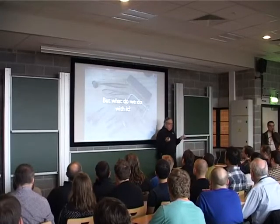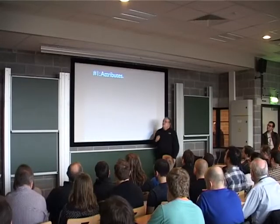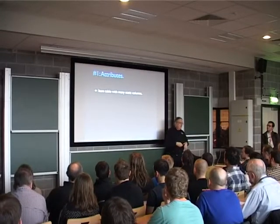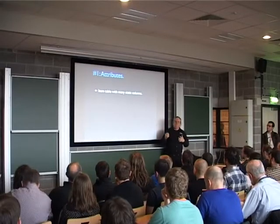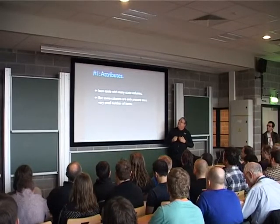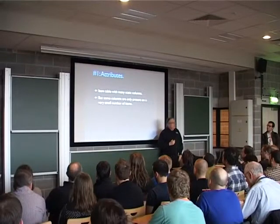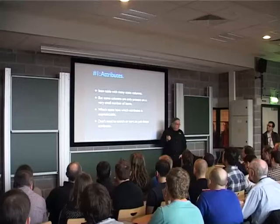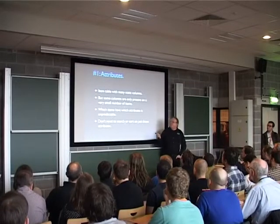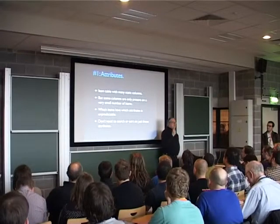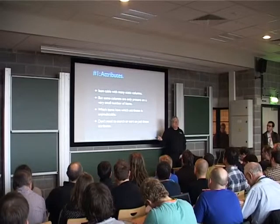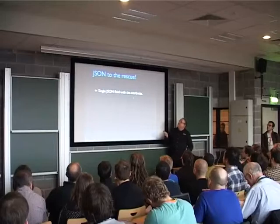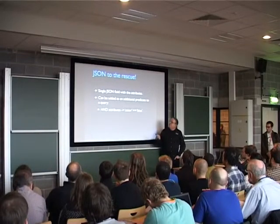So we have these great tools — what do we do with them? Well, you can use JSON to store attributes. A typical example is in some e-commerce system. You have your catalog, it has an item table with lots of static columns like the name and so on. But there are some columns that are only present on a very small number of items — not everything has a color, for example. Which items have which attributes are unpredictable, and generally in this contrived example you don't need to search or sort on just those attributes. So just use JSON — have a single JSON field with those attributes. You can add it as an additional predicate to the query.